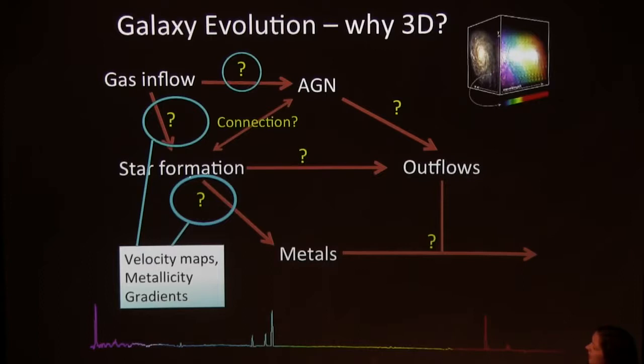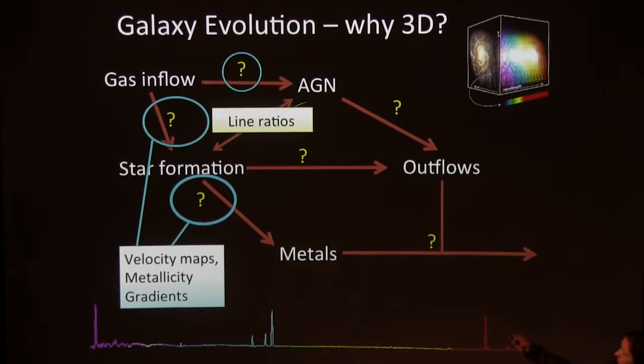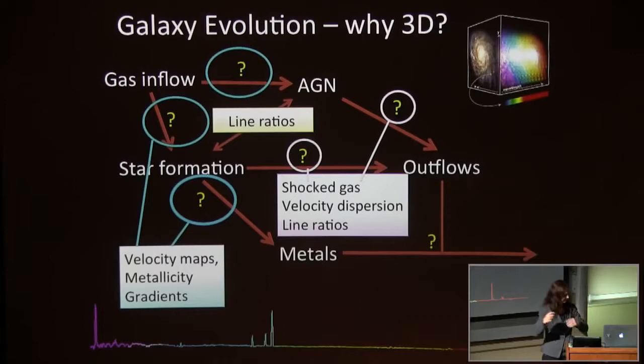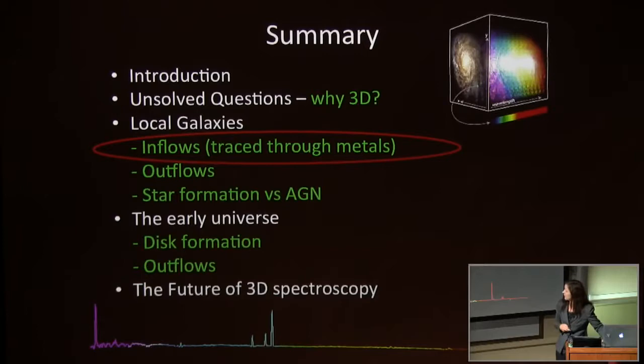We can measure gas inflows and how much metals are being produced by star formation by looking at velocity maps and metallicity gradients in 3D data cubes. We can separate star formation from AGN using line ratios. We can look at outflows through shocked gas via velocity dispersion as well as line ratios, which provide an independent measure of shocks.